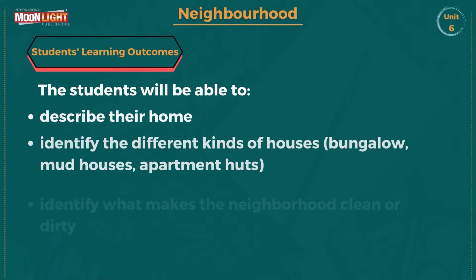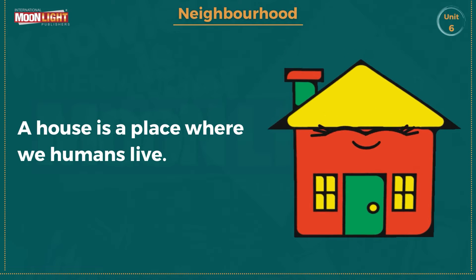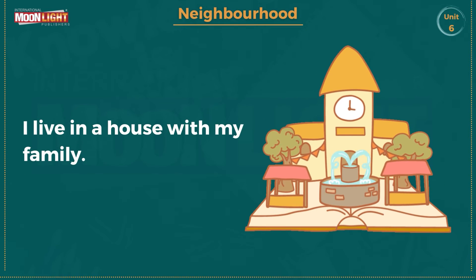Number four, describe their home. Number five, identify the different kinds of houses — bungalow, mud houses, apartments, huts. Number six, identify what makes the neighborhood clean or dirty. And the last one is understand and practice the idea of keeping their homes and neighborhood clean.